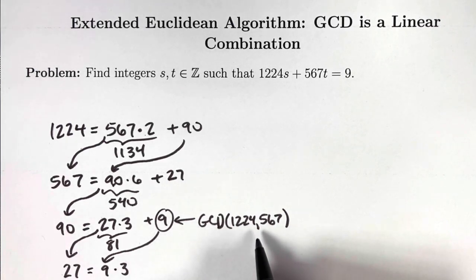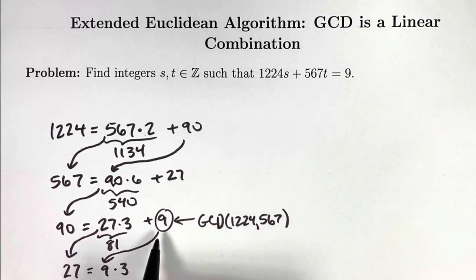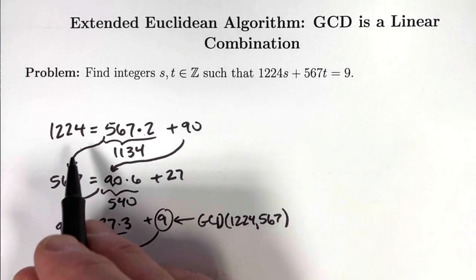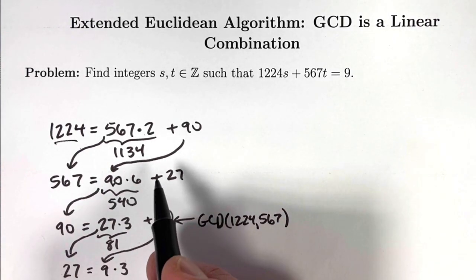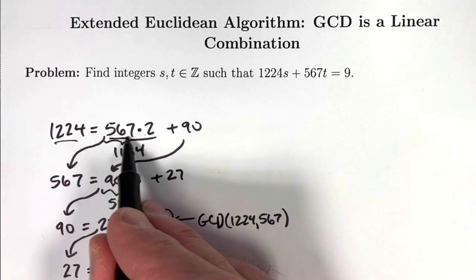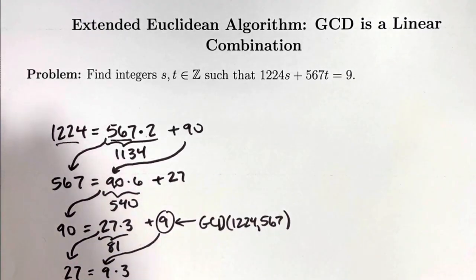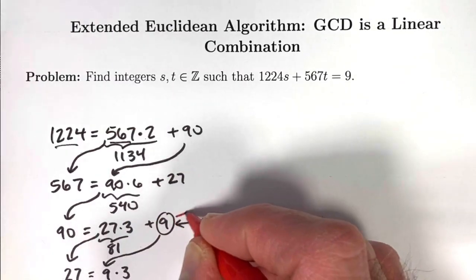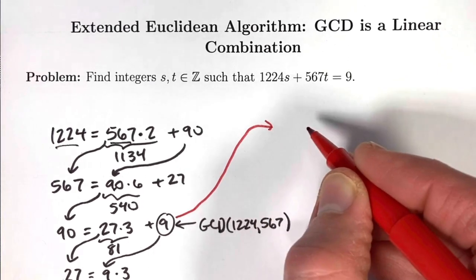In that last video, I also explained why this works. But now we want to take these equations and go in reverse. We want to solve for 9 as a linear combination of the original numbers, 1224 and 567.